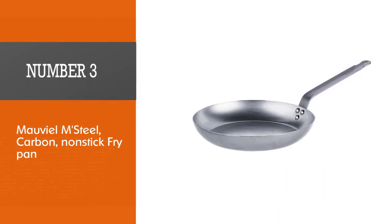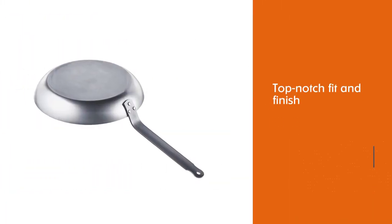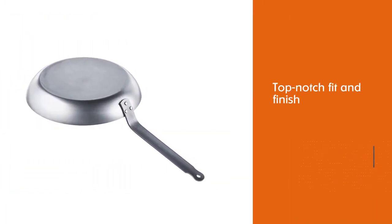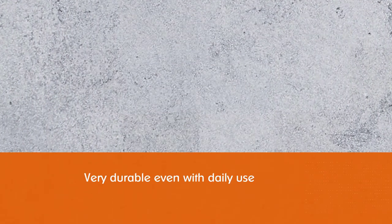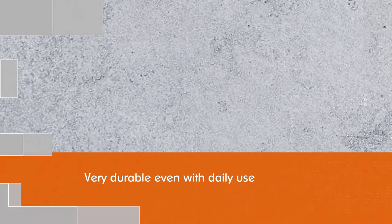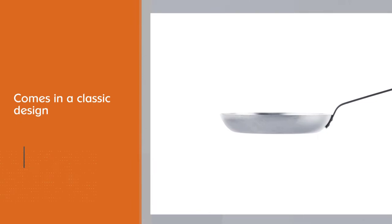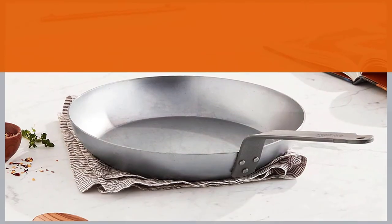Number three: Matfer Bourgeat M Steel carbon non-stick fry pan. The curved sides are designed to make tossing ingredients feel very natural, which is in stark contrast with carbon steel pans that use a straight flared edge design. This M Steel also has a lot of similarities with our best overall pick. The handle design is almost identical, and they both use thick steel that is between 2 and 2.5 millimeters thick.